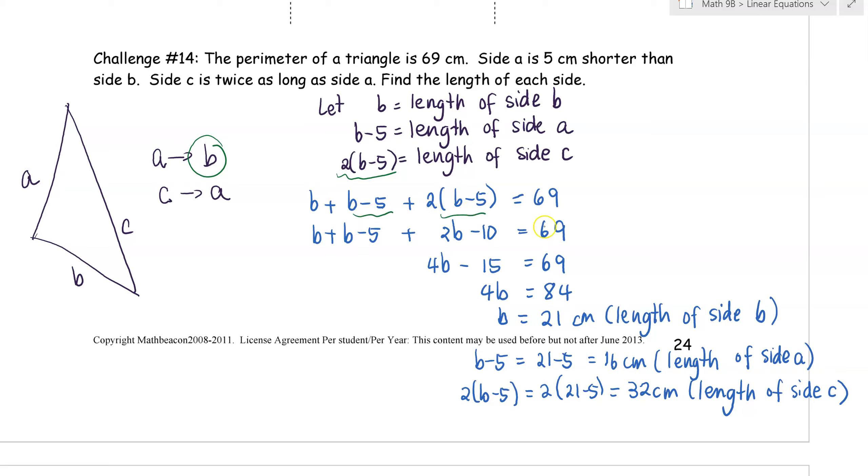Here, we did the distributive property, collect the variables, did our equation. We got B is equal to 21. And that's the length of side B. And B minus 5 is 16, which is the length of side A. And twice the length of side A is 32. So you can make a generalization that the lengths of sides A, B, and C are 16, 21, and 32, respectively.